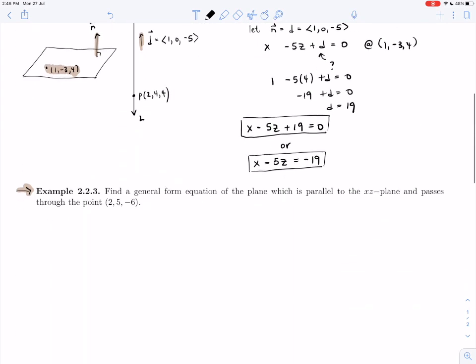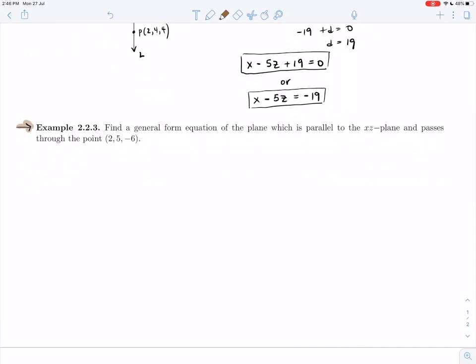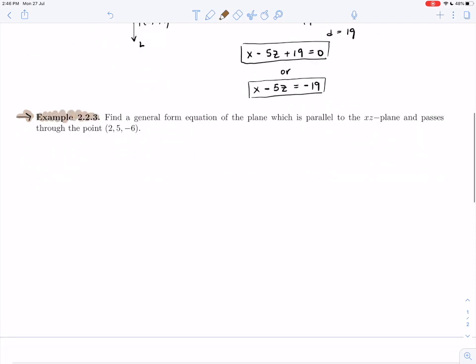Example 2.2.3. Here we are again asked to give the equation of a plane. This time we want it to be parallel to the Xz plane and we want it to contain the point 2, 5, minus 6.